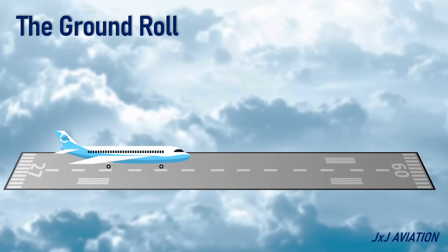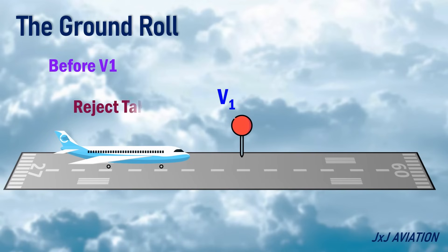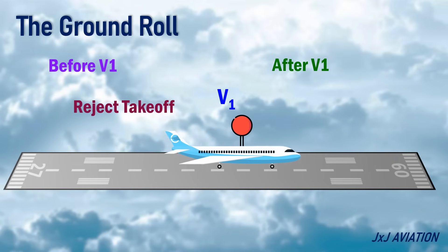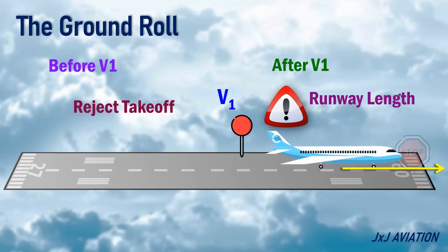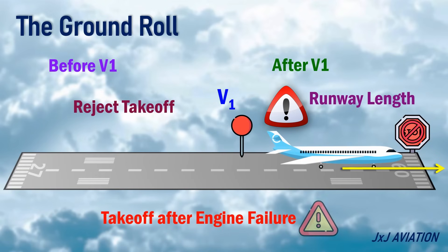The engine failure is assumed to happen at V1. In case of an engine failure before V1, the takeoff must be rejected. If the engine failure occurs after V1, the takeoff must be continued. This is because if the takeoff is rejected after V1, the runway length will not be sufficient for the aircraft to stop safely. Here, let's assume the aircraft continues with the takeoff after the engine failure.